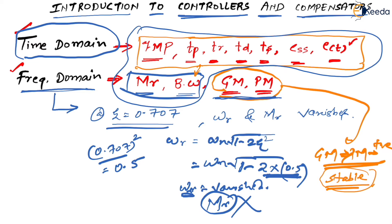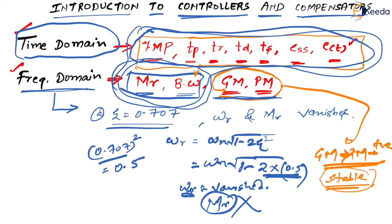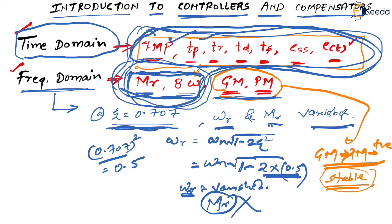So these two groups are interrelated: all time domain parameters and MR and bandwidth. And we have seen that at Zeta equal to 0.707, omega_r and MR vanish, so we cannot completely rely on MR and bandwidth. But even so, those parameters can still be taken care of by percentage MP, Tp, Tr, Td, Ts, ESS, etc., because we know there is a direct relationship between them.